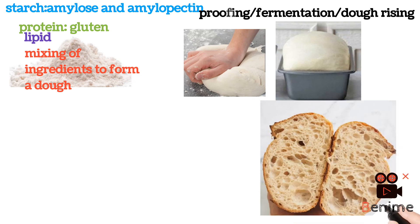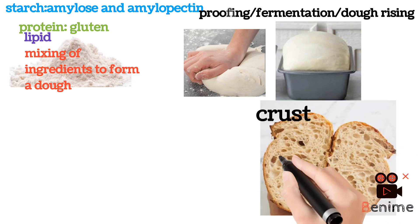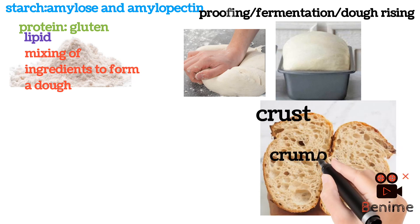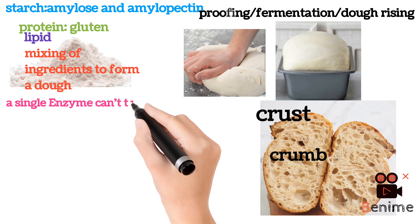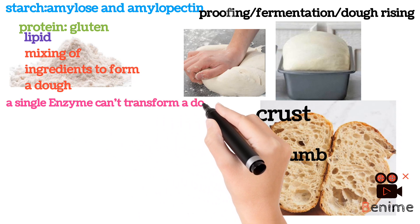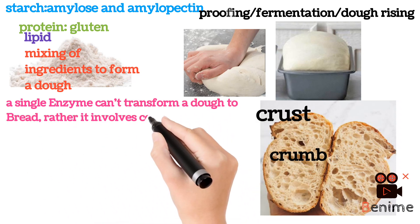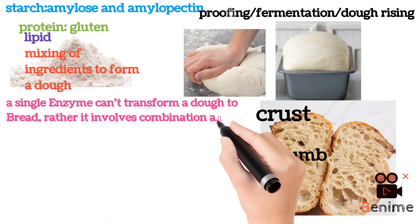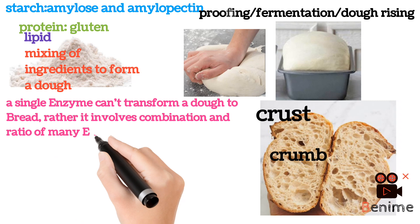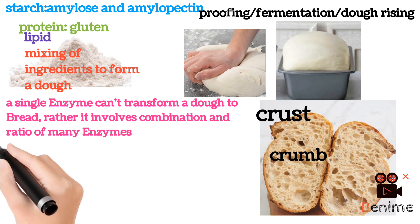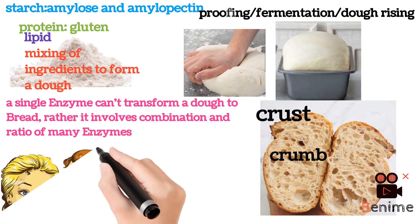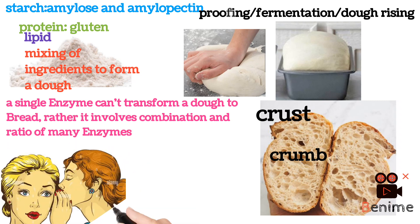The crumb is the inner side and the crust is the outer side of bread. Due to the different substrates in the flour, a single type of enzyme cannot transform dough into bread. So, it involves the application of different enzymes.